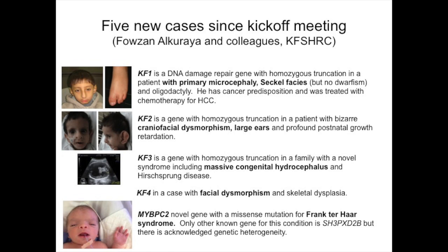The next case involves an individual with abnormal craniofacial appearance with very large ears. This is a homozygous truncation — notably a DNA damage repair gene — and this individual had a case of hepatocellular carcinoma. Another case involves massive hydrocephalus; the gene is a receptor tyrosine kinase involved in neuronal pathfinding that interacts with C-RET, which is also mutated in Hirschsprung's disease.